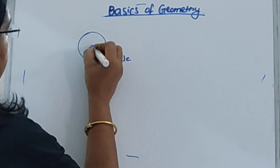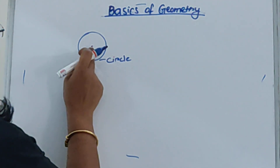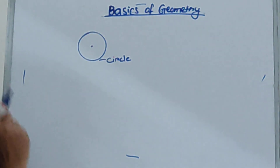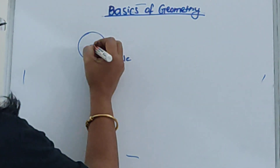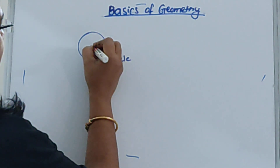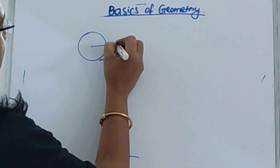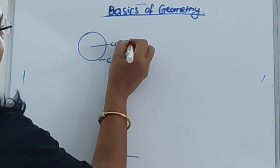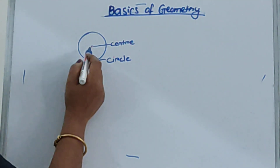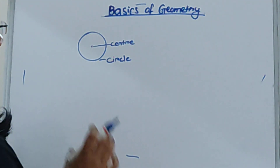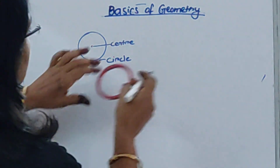Now let's look at the different terms that come in a circle. I will put a dot here, right in the middle of the circle. See — this dot is placed in the center of the circle. So the point in the middle of the circle is called the center.